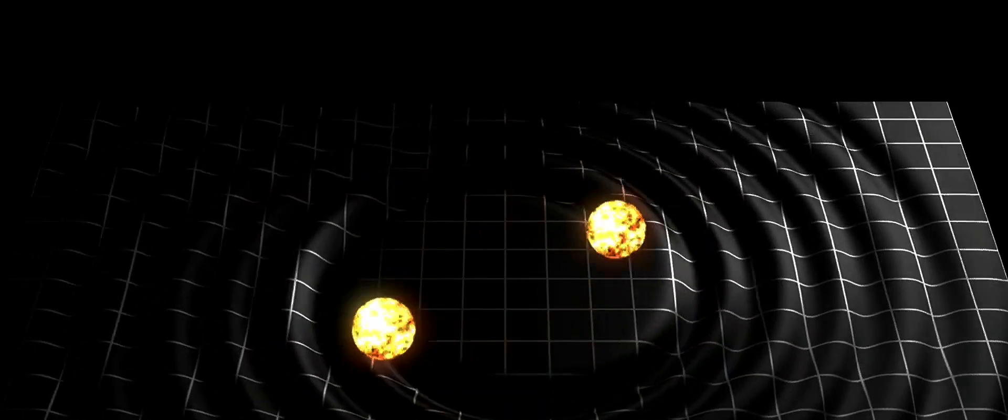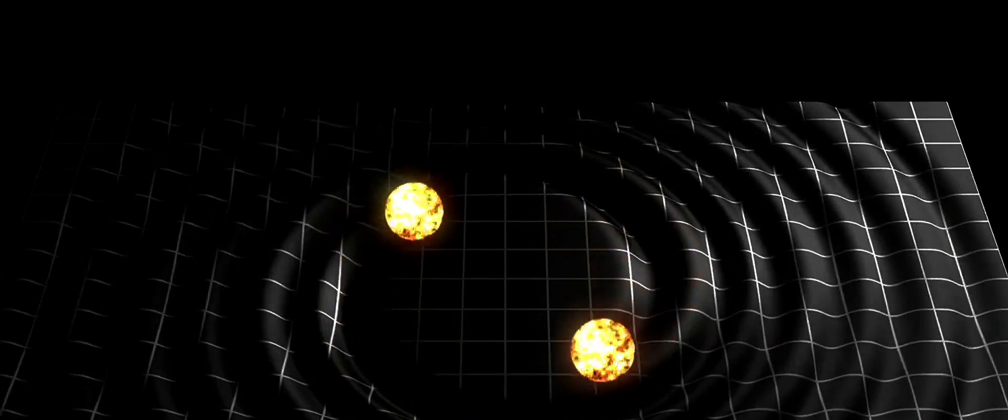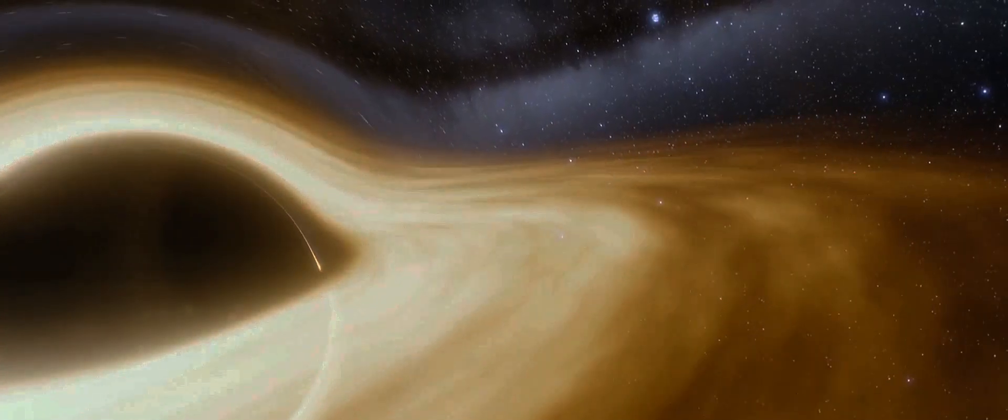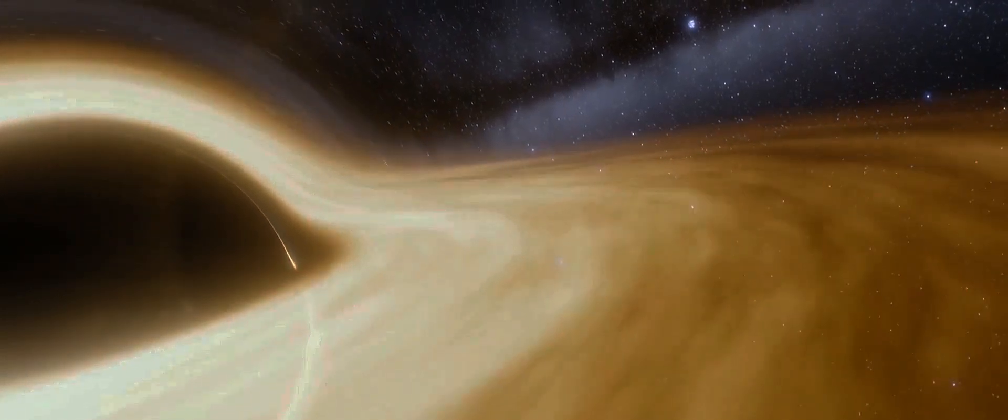You see, gravitational waves are the spacetime equivalent of those pond ripples. They're disturbances that travel across the fabric of spacetime, caused by the acceleration of massive objects. Picture the most massive things you can think of, like stars or black holes. When these celestial giants move, they cause ripples in the spacetime around them, just like the pebble in our pond.